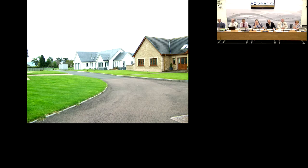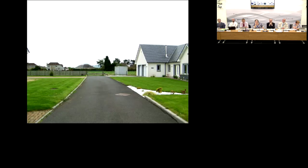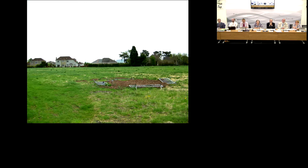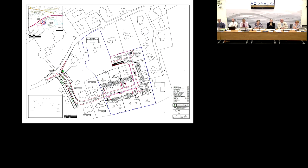Subsequent photographs show the existing driveway from the main village road: two existing houses form part of the private access, bending to the right. Further along, looking toward the bend, a right-hand turn leads to where the development joins the proposed site. Another image shows two existing houses with a gate on the left marking the start of the application site. A final view looks into the application site and back across to existing houses, showing the extent of the site.